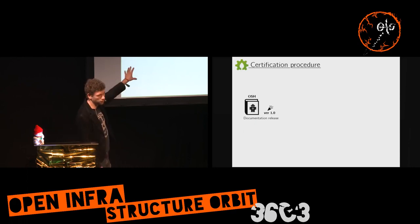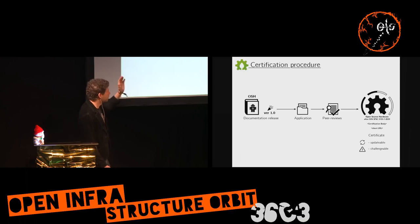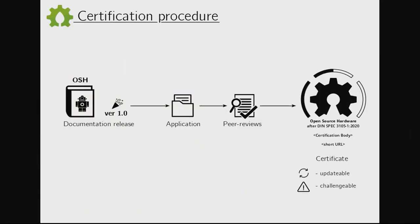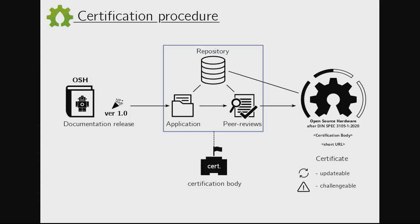The certification process has also been defined by the standard. Here's how it works: you start with the documentation release, then you make an application, and then people can peer review your technical documentation — just as in science. When the peer reviews state that the documentation is complete and readable for others in the field, you receive the certificate. As the certificate is based on peer reviews, it's updatable and challengeable — it's not a certificate just for your lifetime. Whenever someone comes up with a negative peer review that exceeds the positive ones, it is revised. This process is moderated by a certification body.